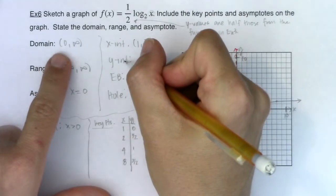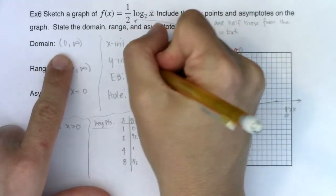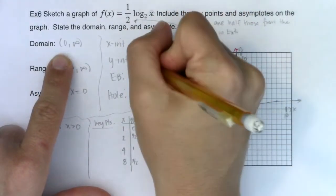I don't have a y intercept because 0 is not in my domain. If you try and plug 0 into the argument, you can't.